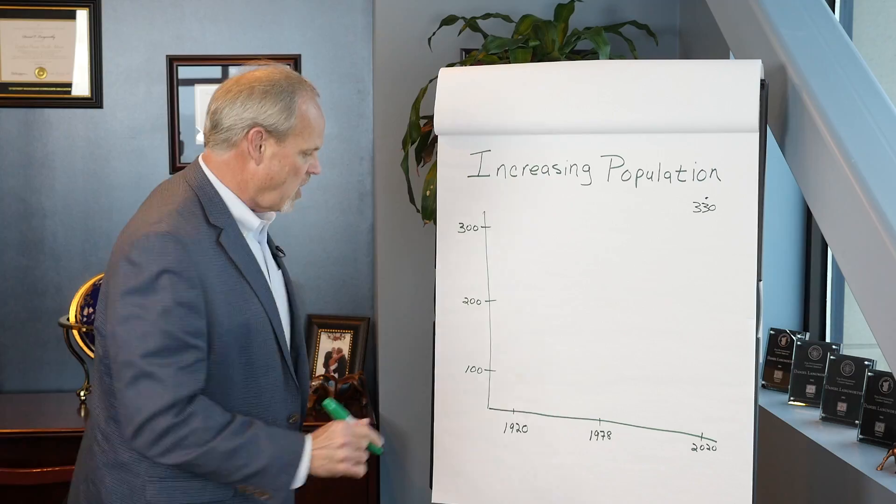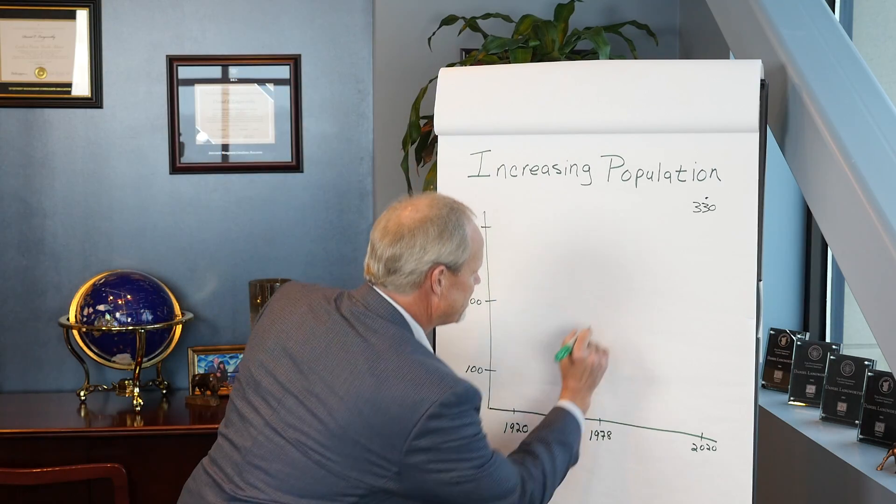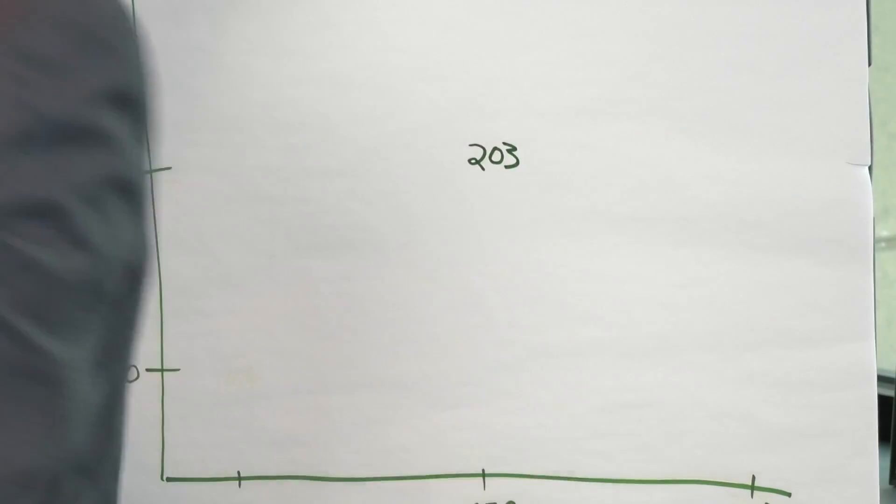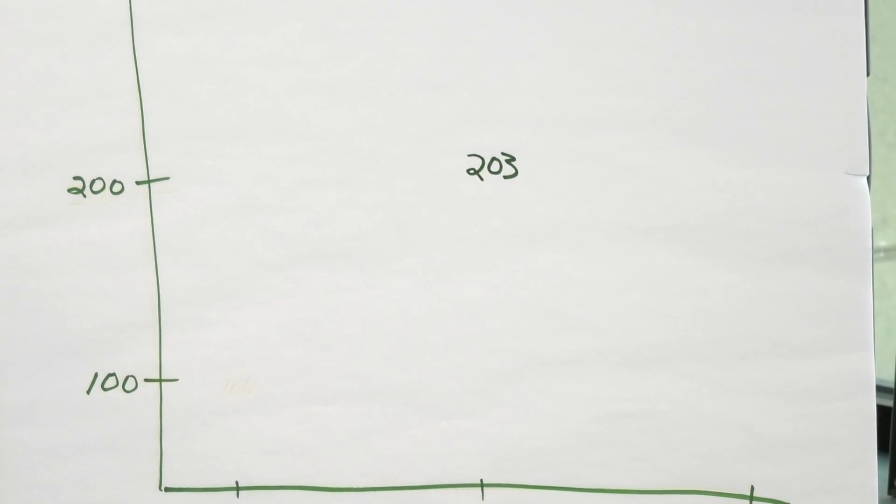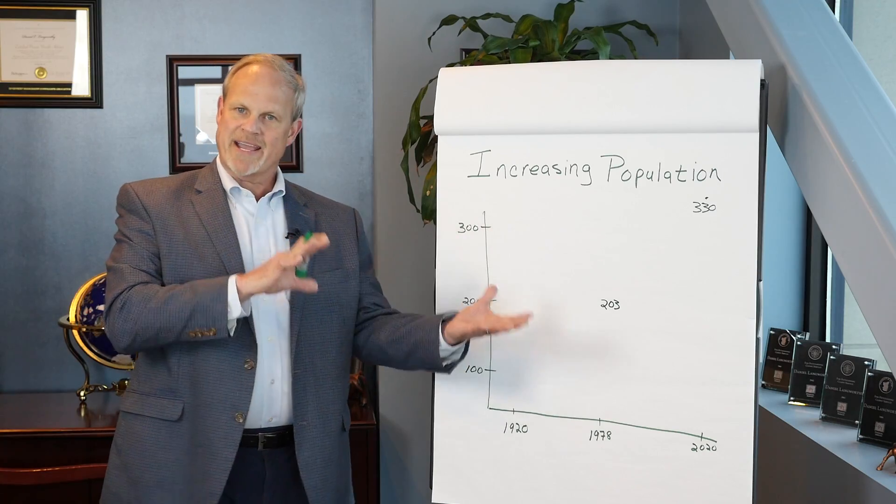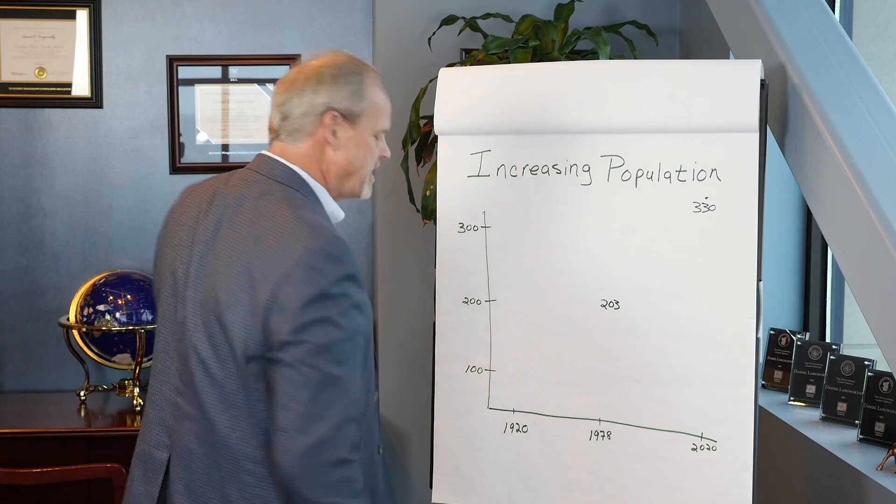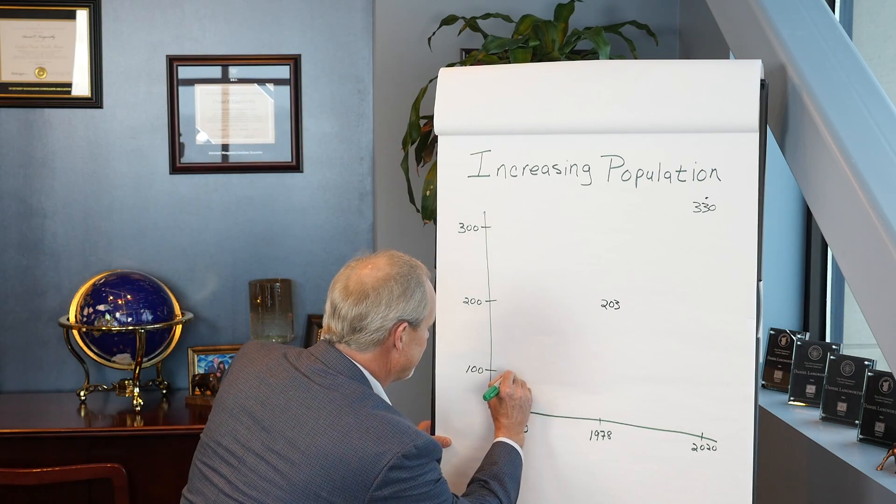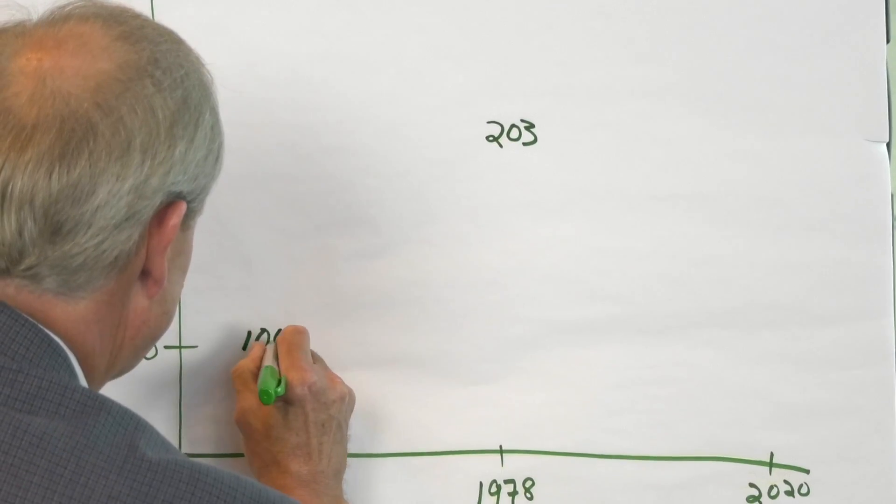50 years ago in 1978 the overall U.S. population was at 203 million, and if we go back 100 years to 1920 the overall U.S. population was only at 106 million.